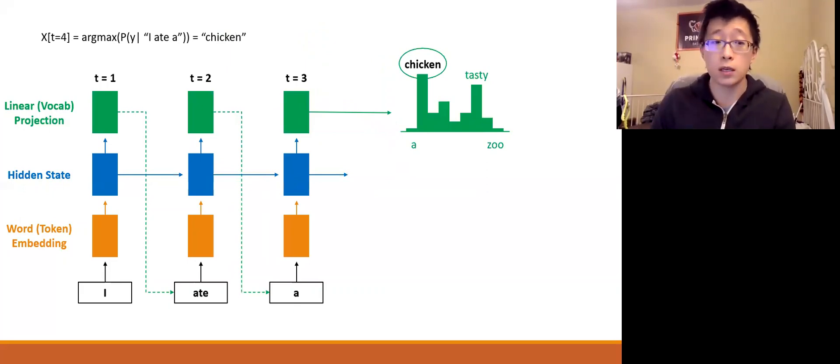So at time step 3, our output distribution says that chicken and tasty are the most likely words to follow. So we choose chicken because it has the highest likelihood or score.